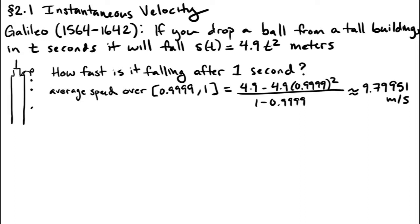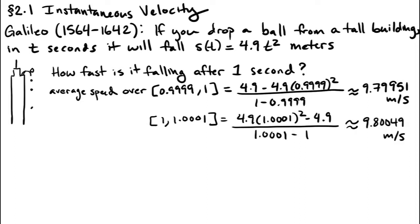If we look at an interval of just 1 ten-thousandth of a second, we get 9.79951 meters per second. Since our interval is so tiny, we think this is probably a pretty good estimate. We could also look at a tiny interval after 1 second. In the interval after 1 second of length 1 ten-thousandth of a second, the average speed is also about 9.8, so this is pretty good evidence that the answer is 9.8.